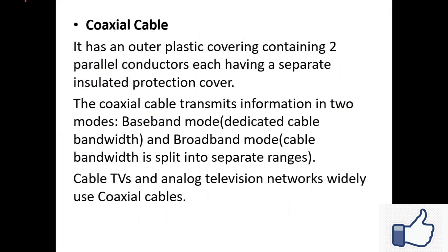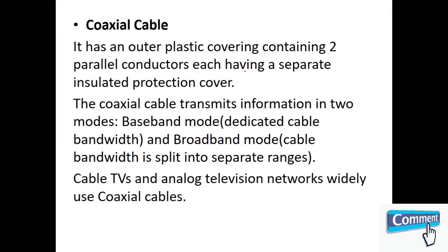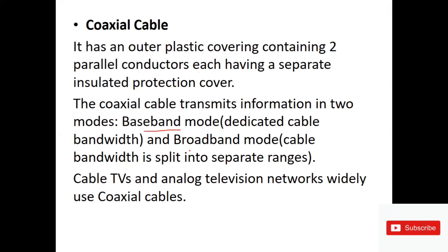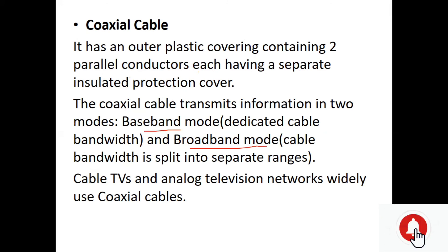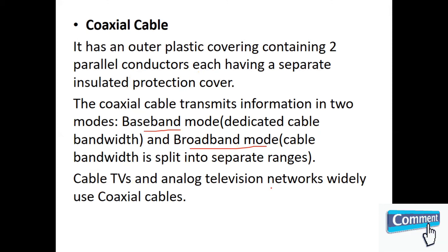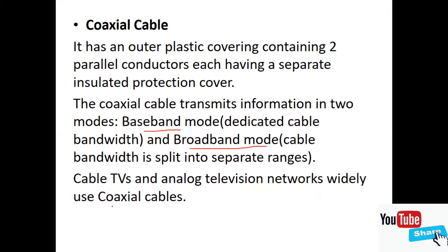Coming to the coaxial cable: it has an outer plastic covering containing two parallel conductors, each with a separate insulated protection cover. The coaxial cable transmits information in two modes — baseband mode, where dedicated cable bandwidth is used, and broadband mode, where the cable bandwidth is split into separate ranges. Coaxial cable is mainly used for cable TVs, analog television, and similar applications.